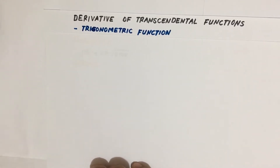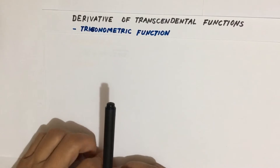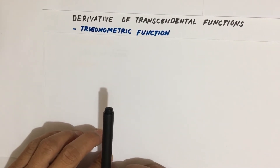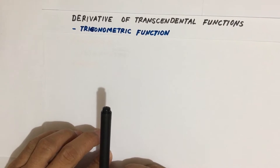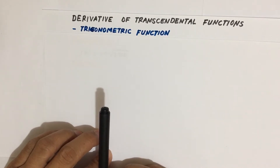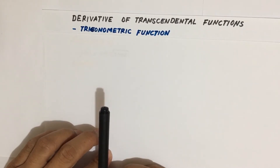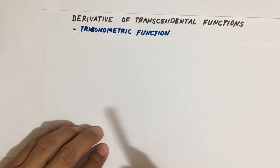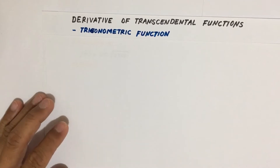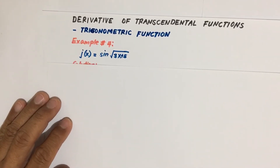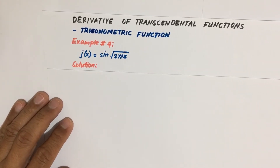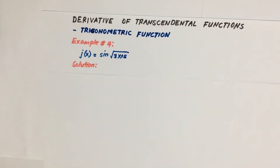Good day everyone, welcome once again to our discussion. We'll continue our discussions on the derivative of transcendental functions, and now our focus is the derivative of trigonometric functions. Last time we solved three sample problems already, so today we are going to continue with another problem — Example number 4. We're given g(x) equal to sine of the square root of 3x plus 5.